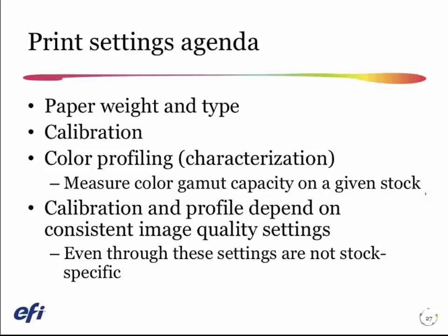The last thing I need to think about with configuring my paper settings is keeping all my other print settings constant. If I chose to take the number one sheet in your shop and make a calibration and a profile, and I did all that work on a particular print system at 600 dots per inch with the Line 3 screen, and then I come in tomorrow — even if I recalibrate — but I start printing at 1200 dpi with the Dot 1 screen, you're going to get a very different result. The resolution and halftone screen affect the tonality and really need to be locked in for the profile and calibration to work as intended.